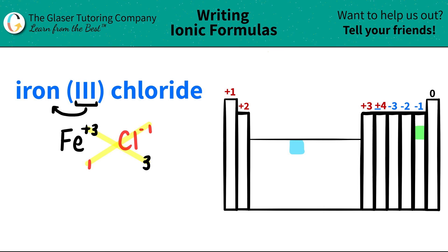And now we're ready to write the formula. I need 1 iron. So I don't have to write the 1, but I need 3 chlorines. So Cl3.